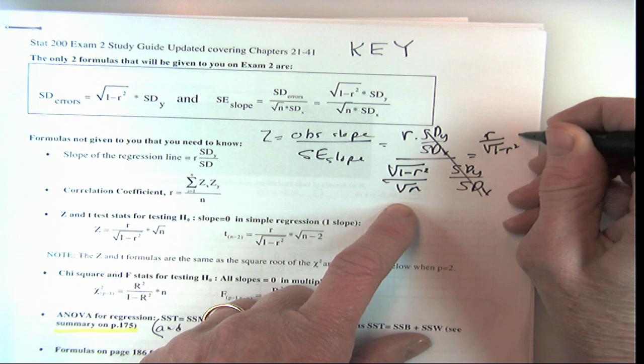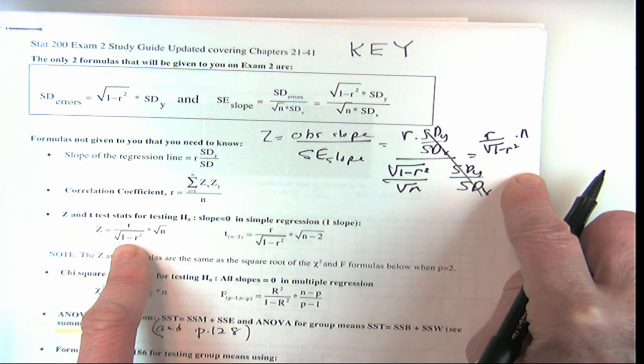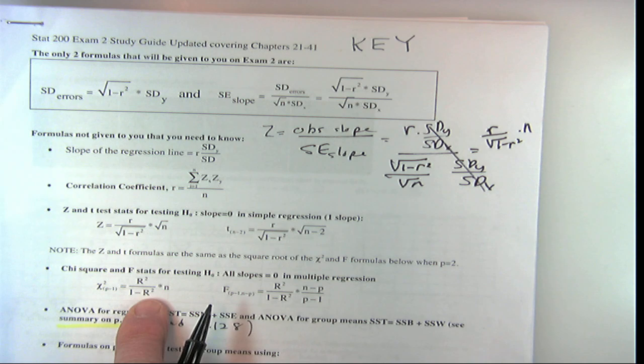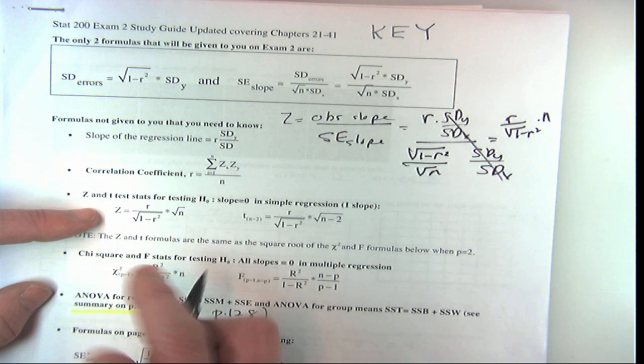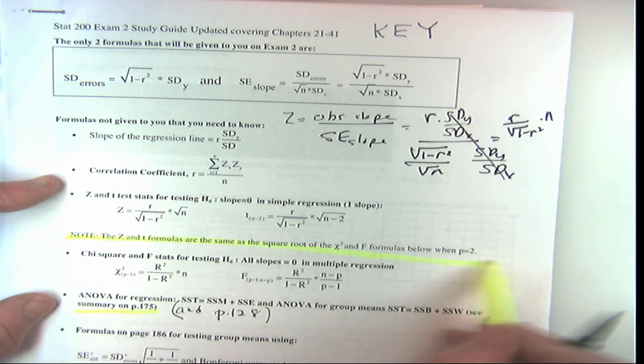What you get is the square root of 1 minus r-squared over the square root of n. When you simplify, it's just r over the square root of (1 minus r-squared) times n, and if you square it, you get the chi-squared. So z-squared equals chi-squared when you have one degree of freedom—you can only do that when p equals two (one slope).